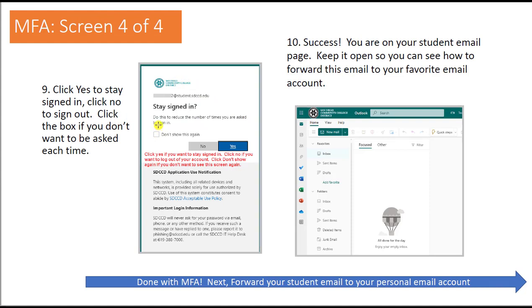On the next screen they're asking two things: first, do you want to stay signed in? If you say no, you'll be logged out. If you say yes, you'll be able to work within your account — you'll want to select yes because to forward your email you'll need to stay on this page. You also have the option to click a box so you're not prompted to authenticate every time. If you're on a public computer, don't click that box; if you're on your home computer, click it to avoid repeated prompts.